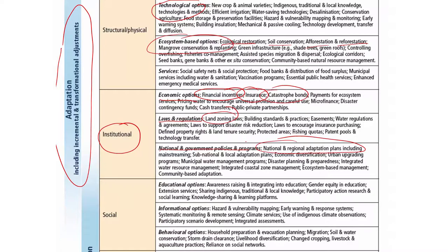Social options include educational, informational, and behavioral options - awareness raising and integration into education. Courses like this are part of that education system, with the hope that teachers get educated and become aware of climate variability, change, risks, and adaptation and mitigation options, and pass on that knowledge to newer generations. Things like gender equality in education, extension services, sharing indigenous, traditional, and local knowledge are happening at various levels through governments, NGOs, novel sustainability degrees, and rural development universities.